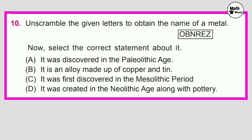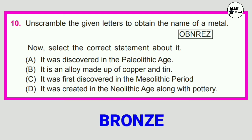Question No. 10: Unscramble the given letters to obtain the name of a metal. Unscrambling the letters we get Bronze. Correct option is B. It is an alloy made up of copper and tin.